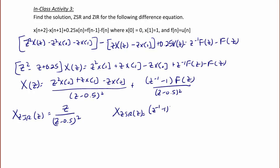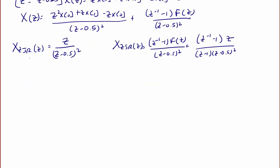equals [(z⁻¹ - 1)F(z)] / (z - 0.5)². If I put in the value for F(z), this becomes (z⁻¹ - 1) times z / (z - 1) over (z - 0.5)².